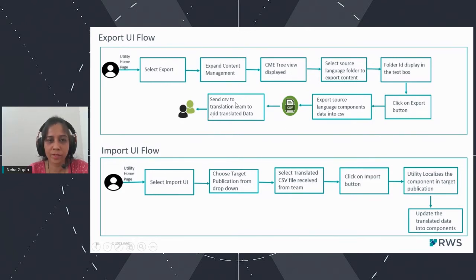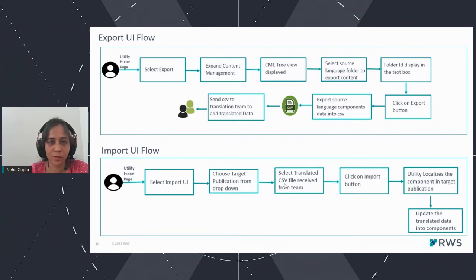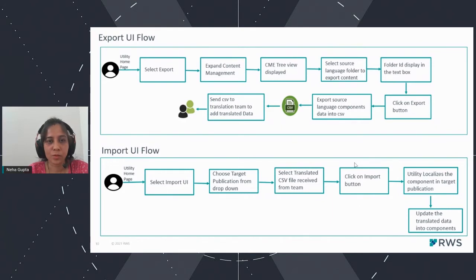Once everything is ready, the user can go back to the homepage of the utility and select the import option. Here they need to choose the target publication — basically in which publication they want to import the translated data. After selecting the publication, they select the translated CSV file received from the translation team. When they click the import button, it will read all the respective columns and the field component data, add each item into the target component, localize it, update the content, and save the data.